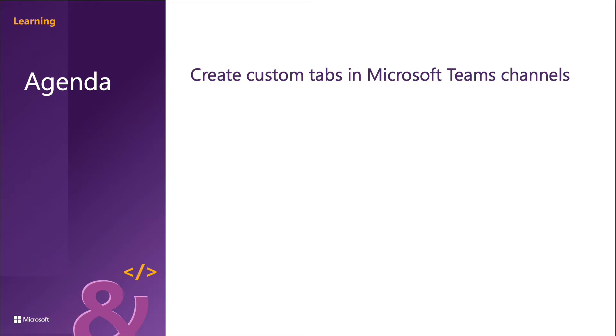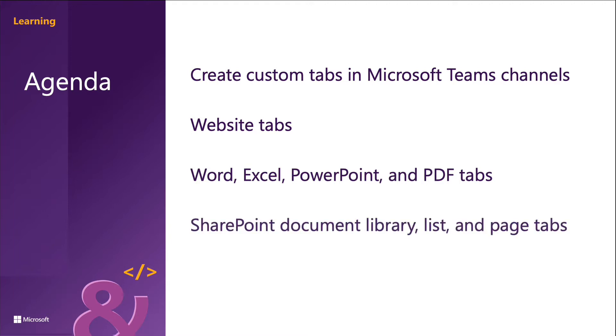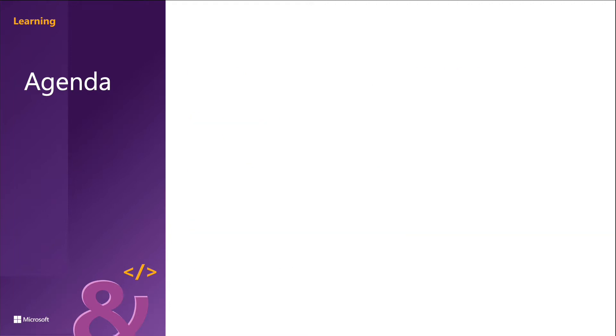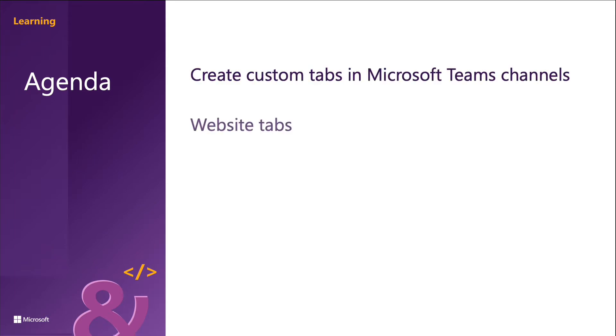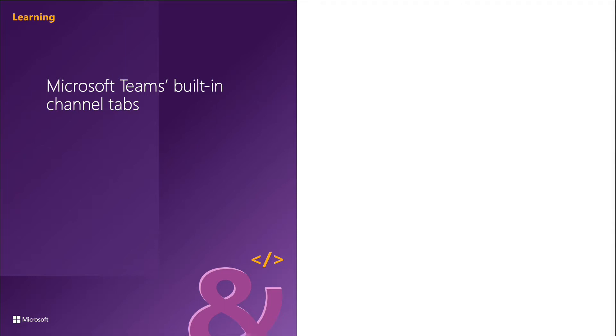Microsoft Teams supports the following kinds of tabs that you see listed here: website tabs, Word, Excel, PowerPoint, and PDF tabs, SharePoint document libraries, lists, and page tabs, and also some additional tabs such as Planner, Microsoft Stream, Microsoft Forms, and Power BI. You can use these tabs to display rich content for your channel members by adding these different tabs programmatically to your Microsoft Teams team.